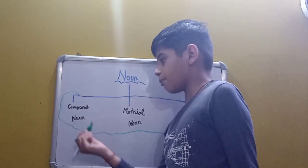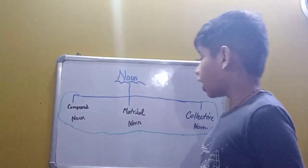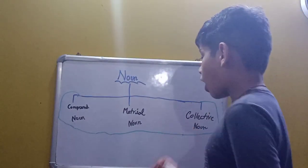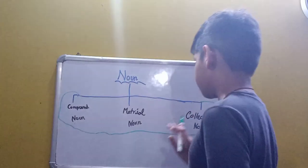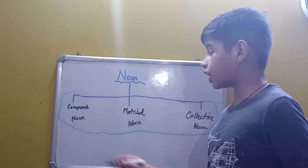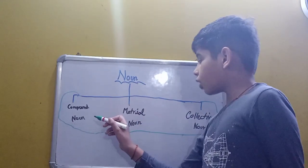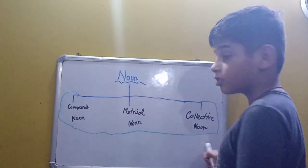The fourth type of noun is compound noun. The fifth type of noun is material noun, and the sixth type is collective noun. These three types are compound noun, material noun, and collective noun.